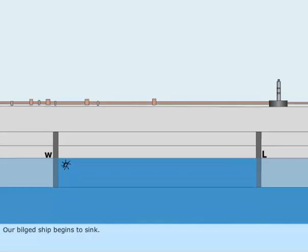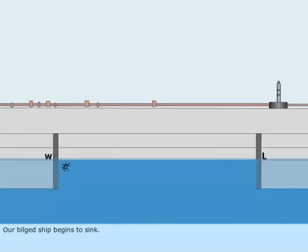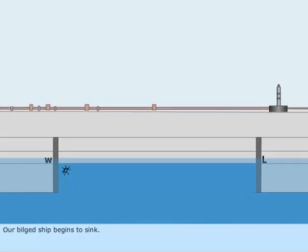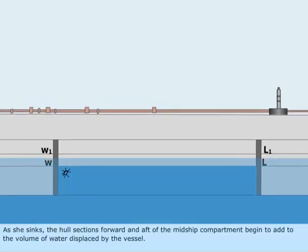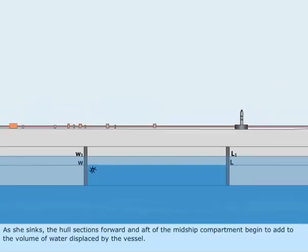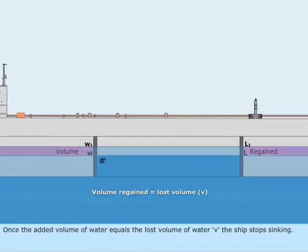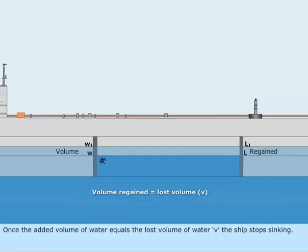Our bilged ship begins to sink. As she sinks, the hull sections forward and aft of the midship compartment begin to add to the volume of water displaced by the vessel. Once the added volume of water equals the lost volume V, the ship stops sinking.